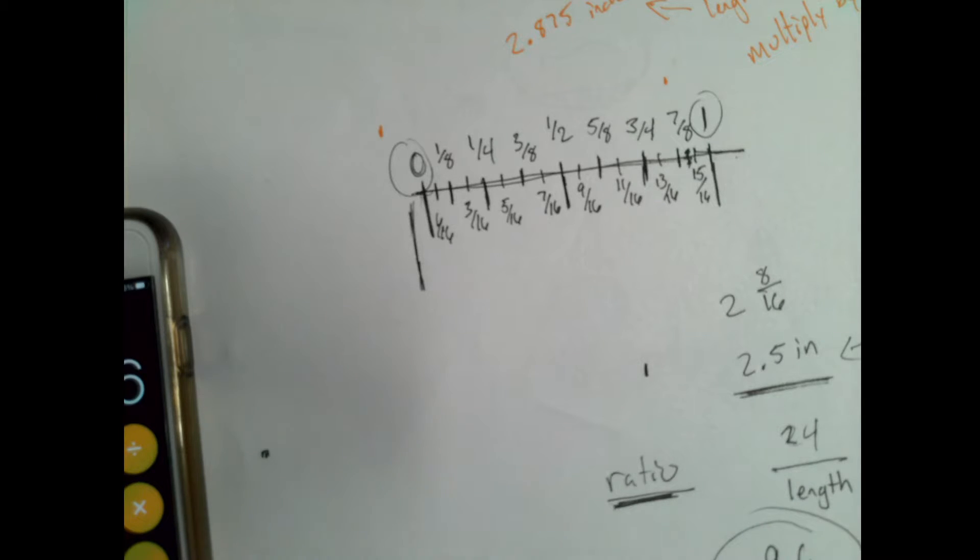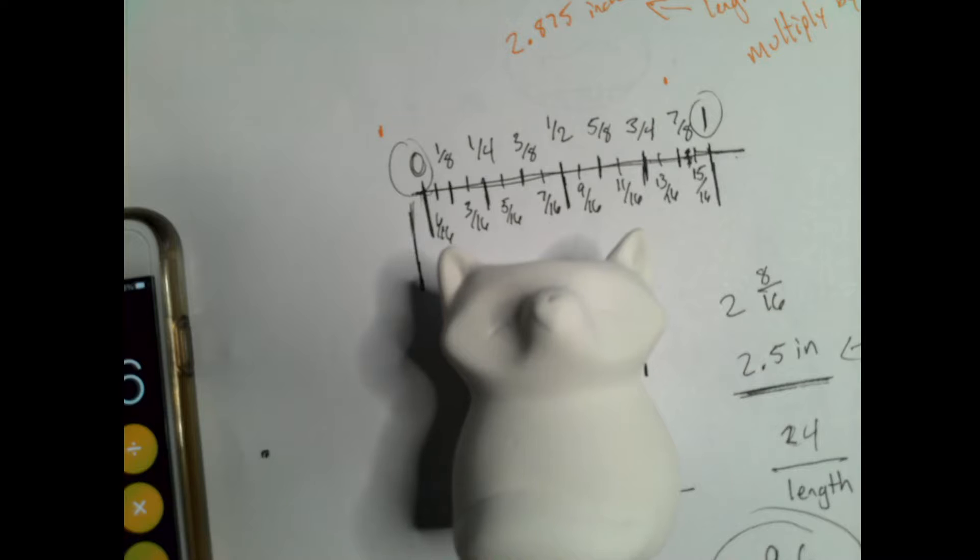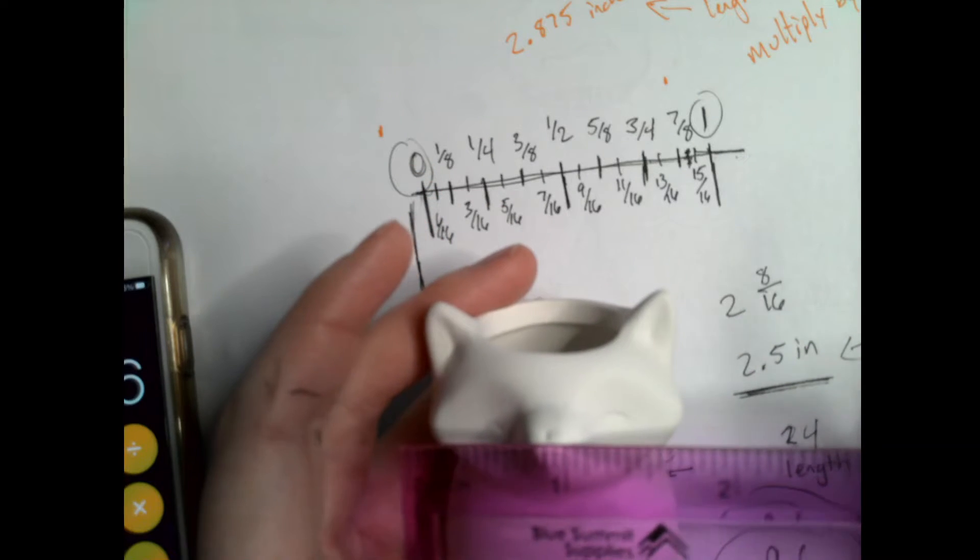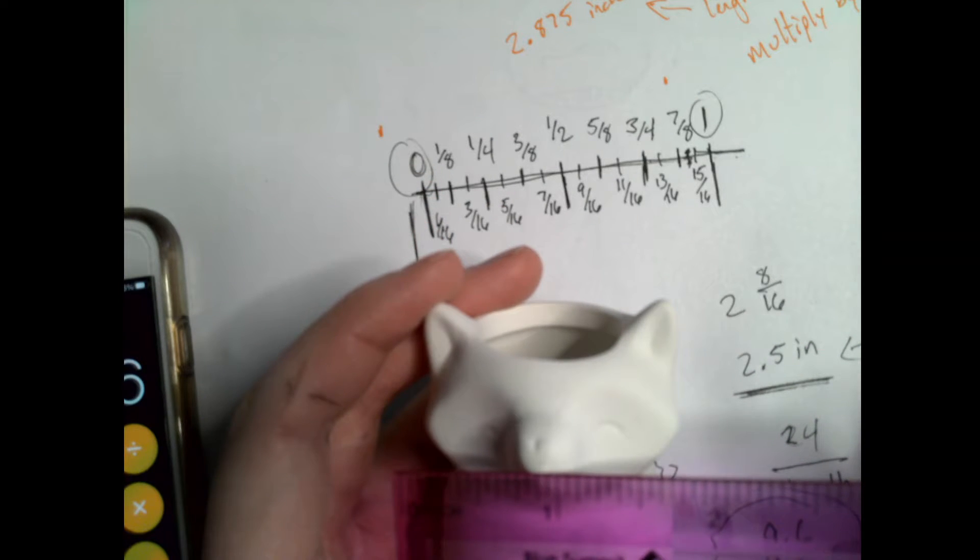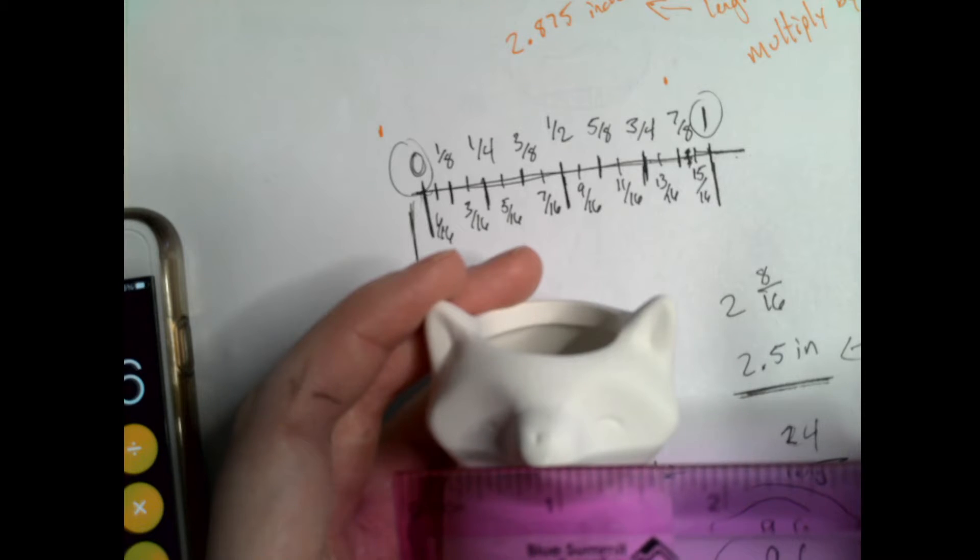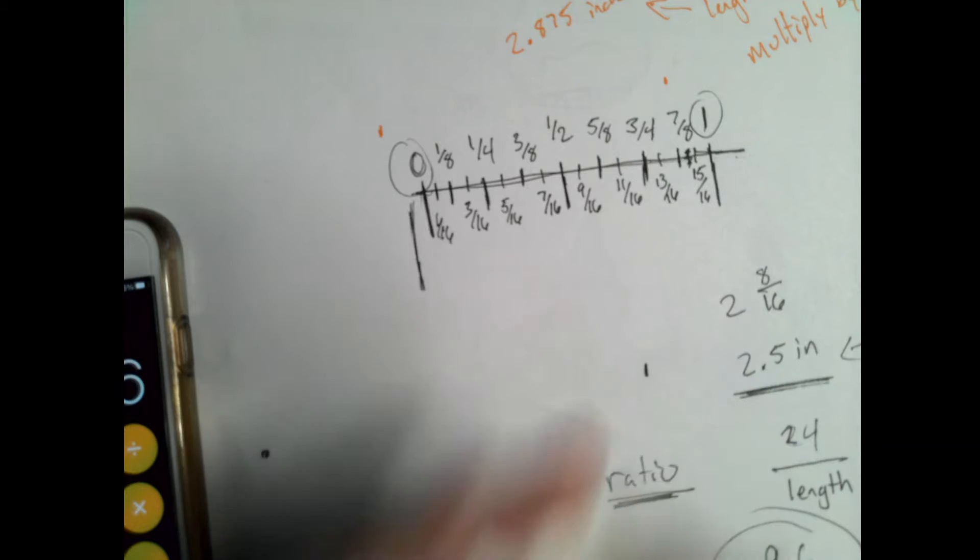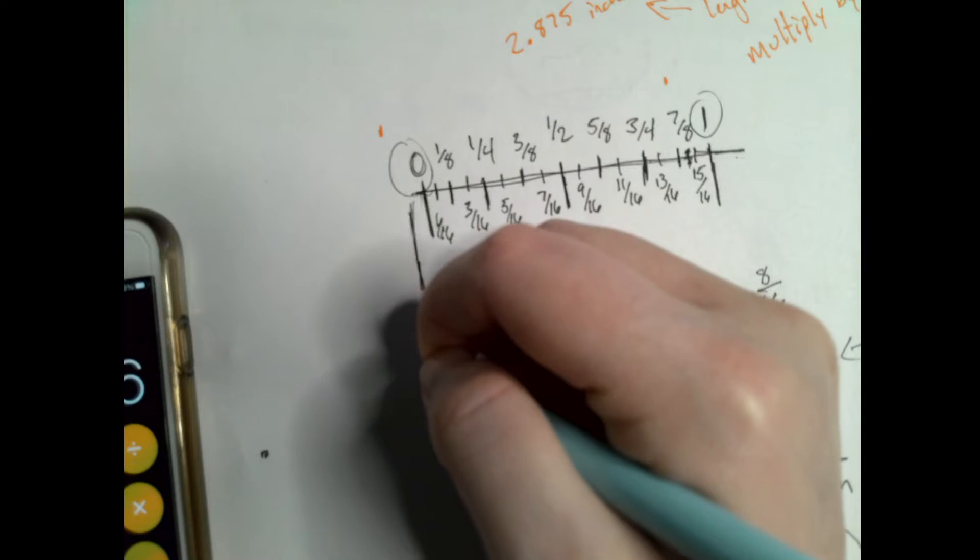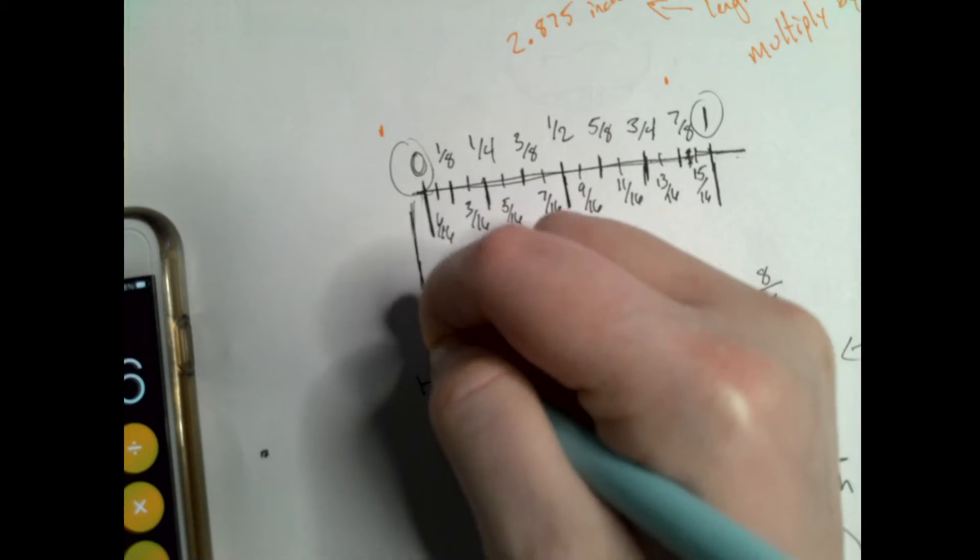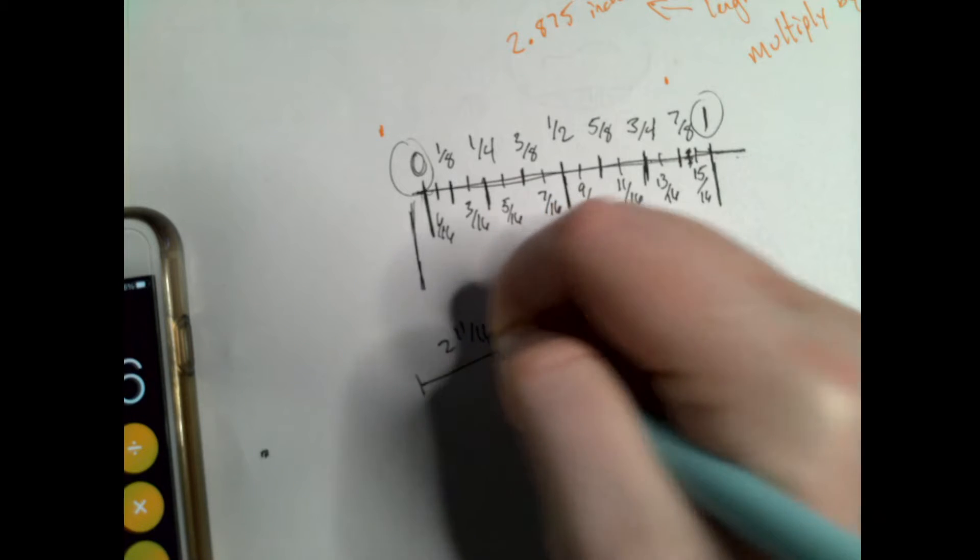I'll start with the width across the face. So width across the face, it's going to look different on camera, but it's about 2 and 11 sixteenths. So across the face is 2 and 11 sixteenths.